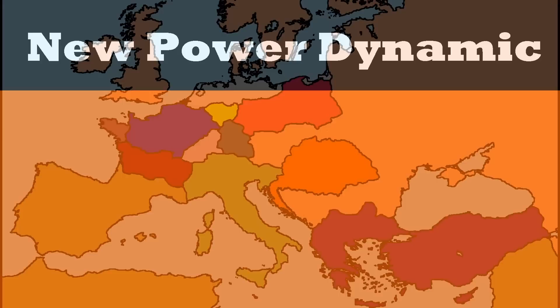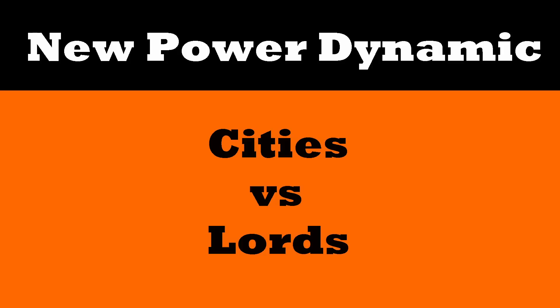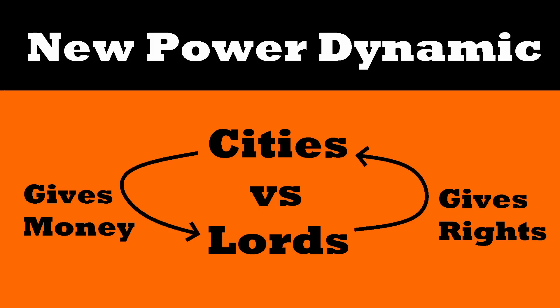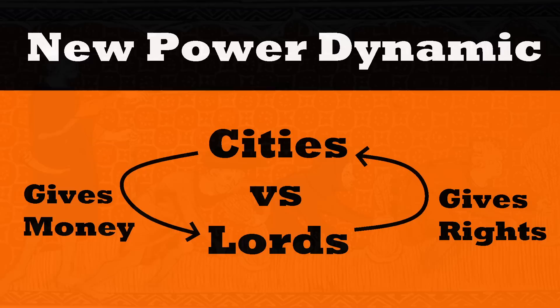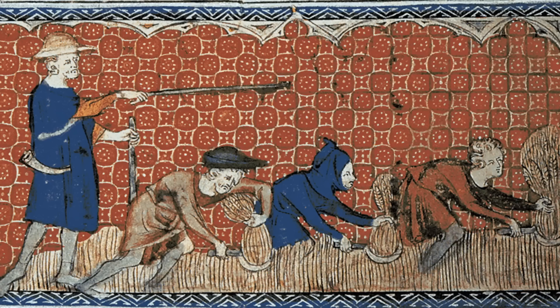The rise of these cities meant a change in the European power dynamic. The increasingly rich cities started to demand more rights, which the nobles initially didn't want to provide. But the cities were so rich that many eventually managed to buy more and more rights from their nobles, reducing noble control over cities but increasing the wealth of the nobility. The rise of cities caused serfdom in Western Europe to decline, as cities became the primary source of noble wealth, making managing serfs a hassle.